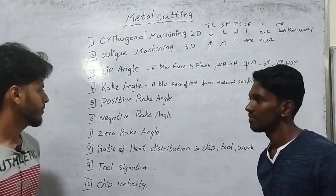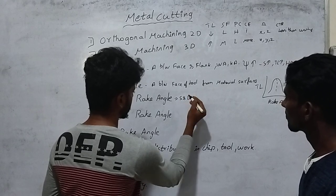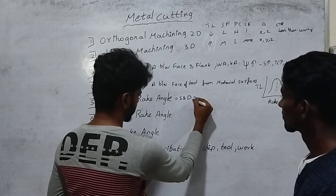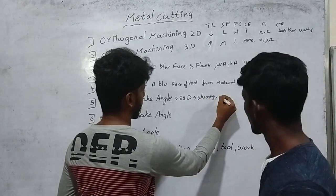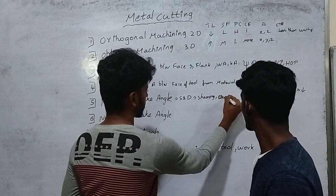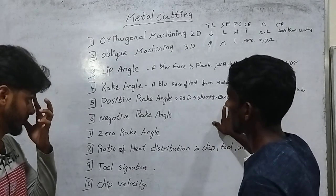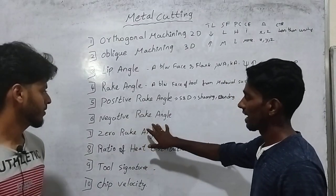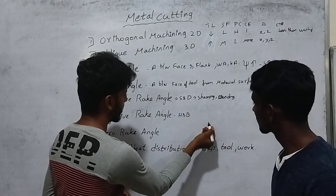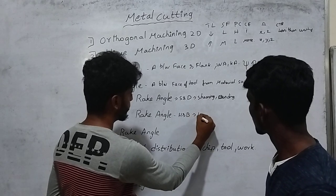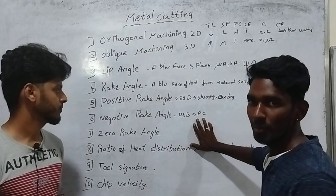Let's define the positive rake angle. In the positive rake angle, we use soft and ductile material. The forces involved are shear and bending forces. For the negative rake angle, we use hard and brittle material, and we use pure compression force and pure compression stress.